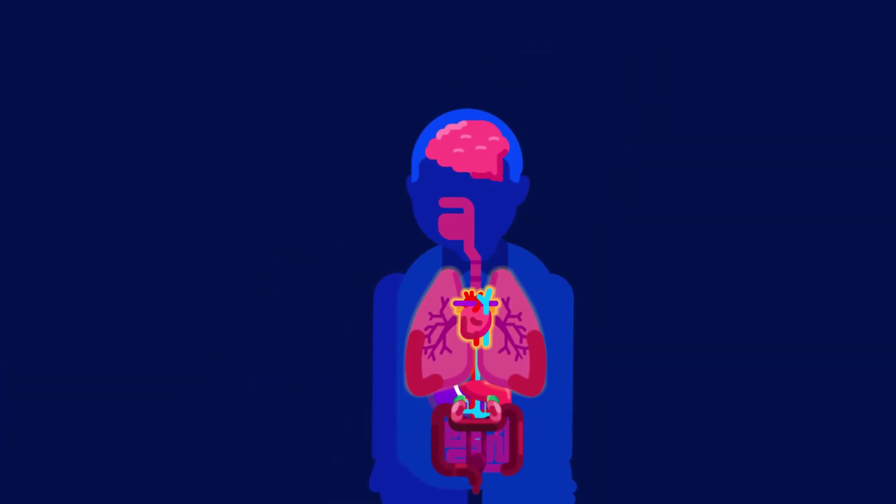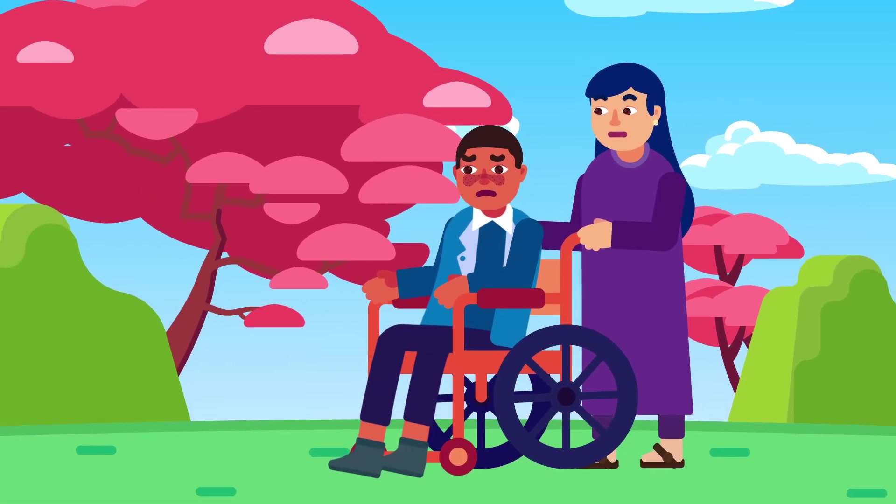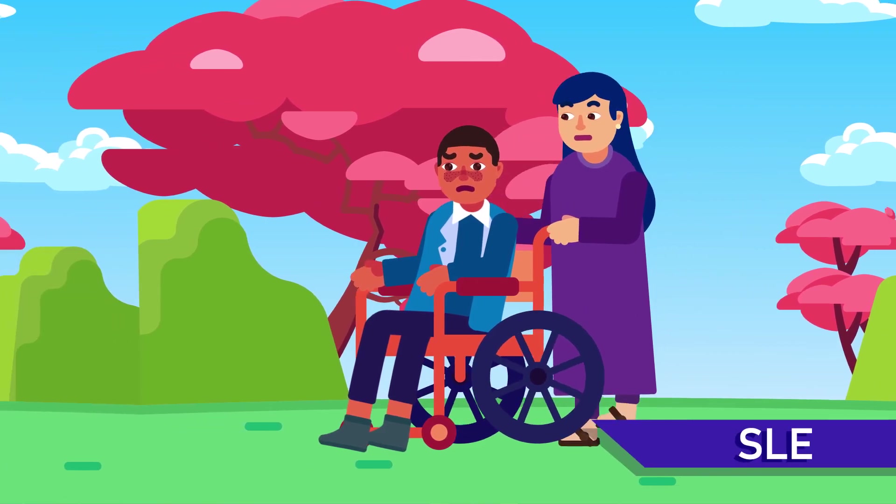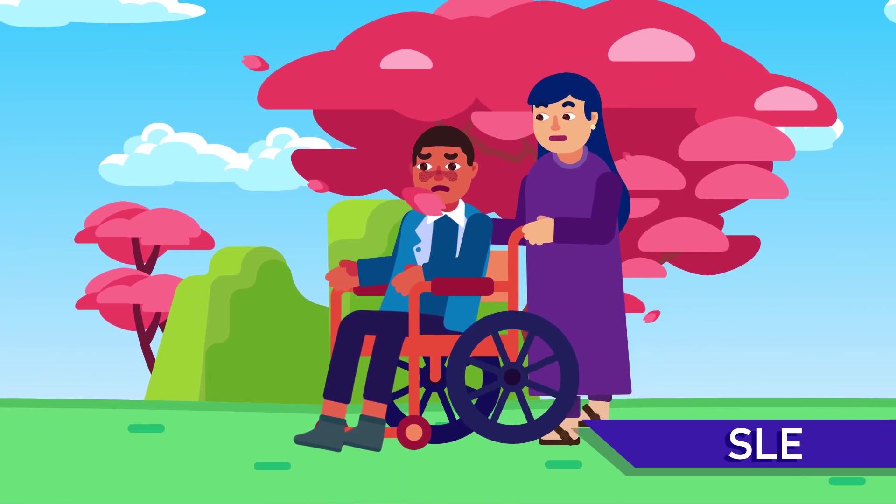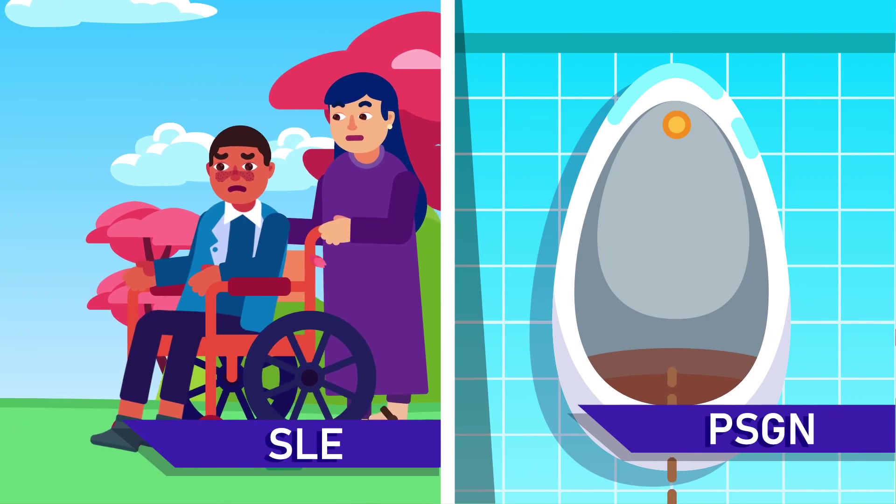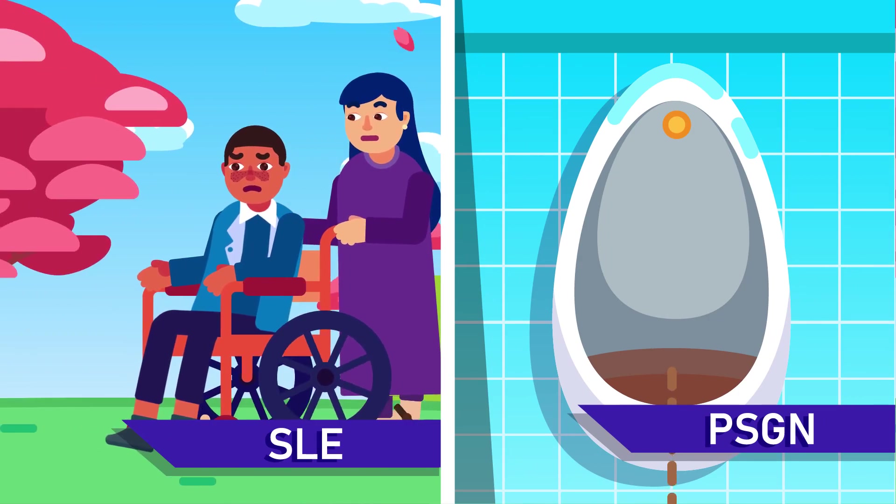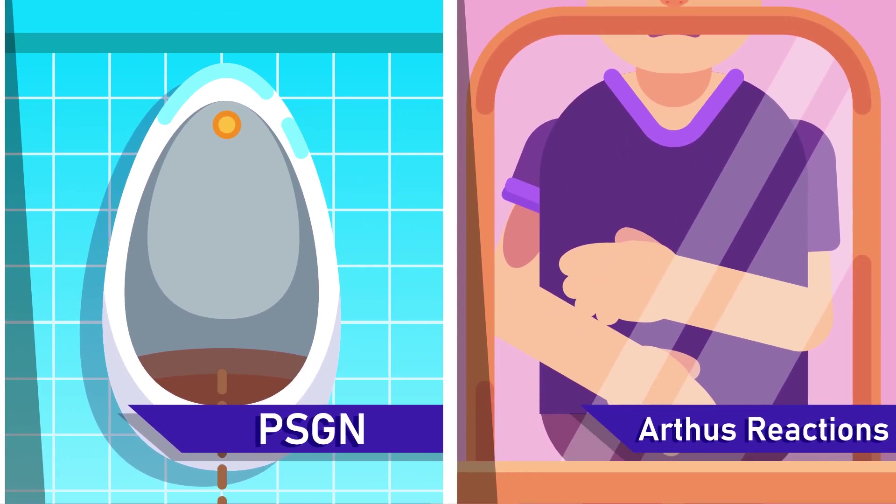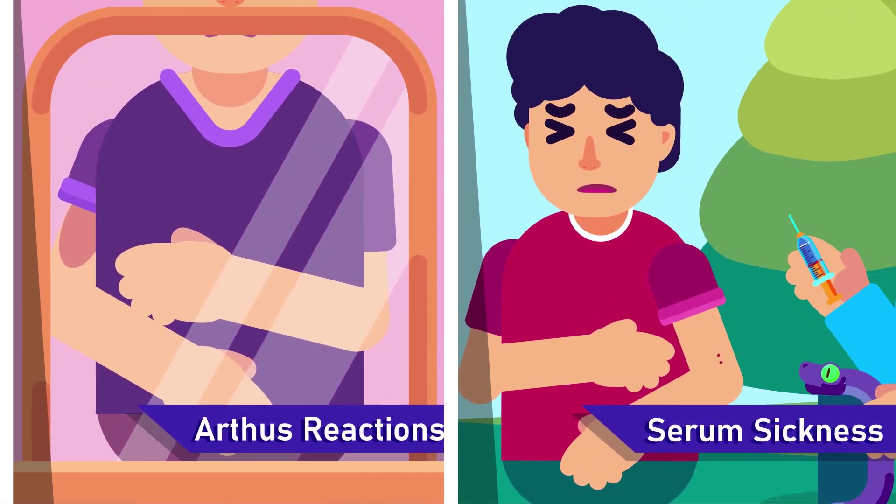These diseases tend to be systemic. The examples of the diseases are: 1. Systemic lupus erythematosus. 2. Post-streptococcal glomerulonephritis. 3. Arthus reactions. 4. Serum sickness.